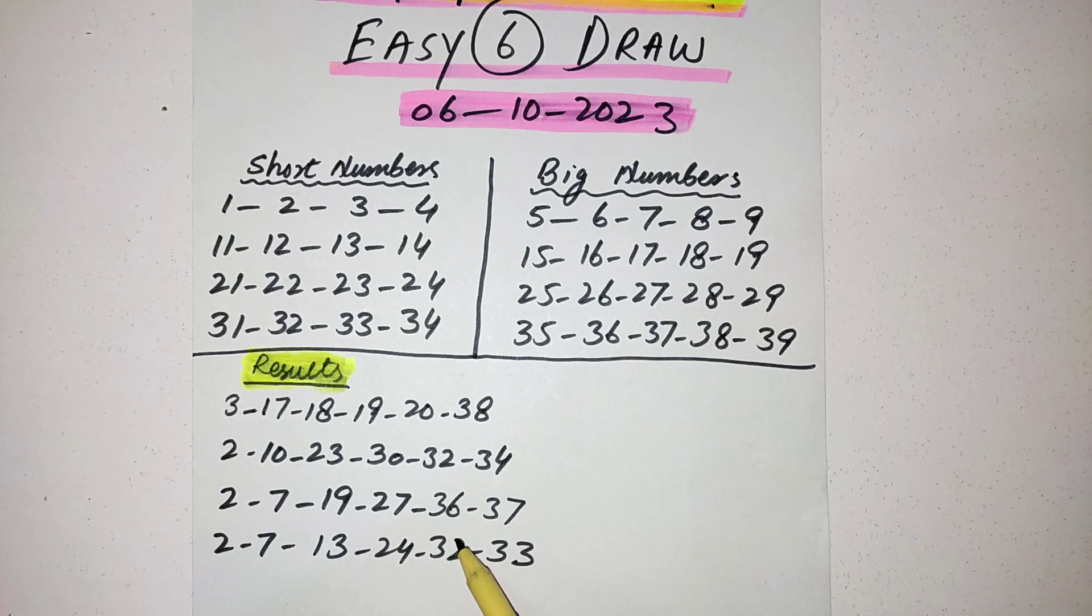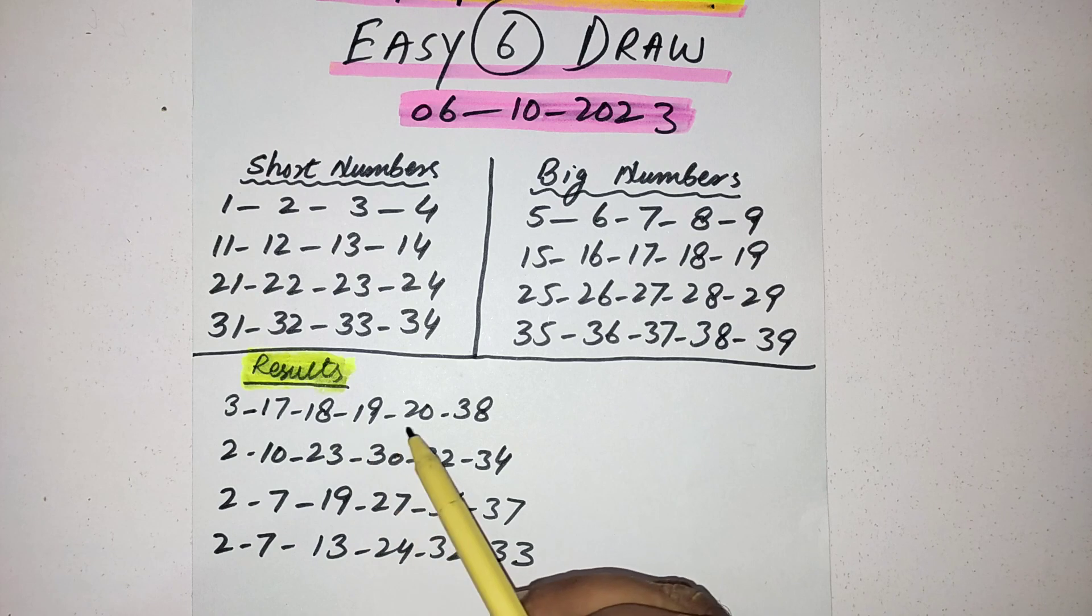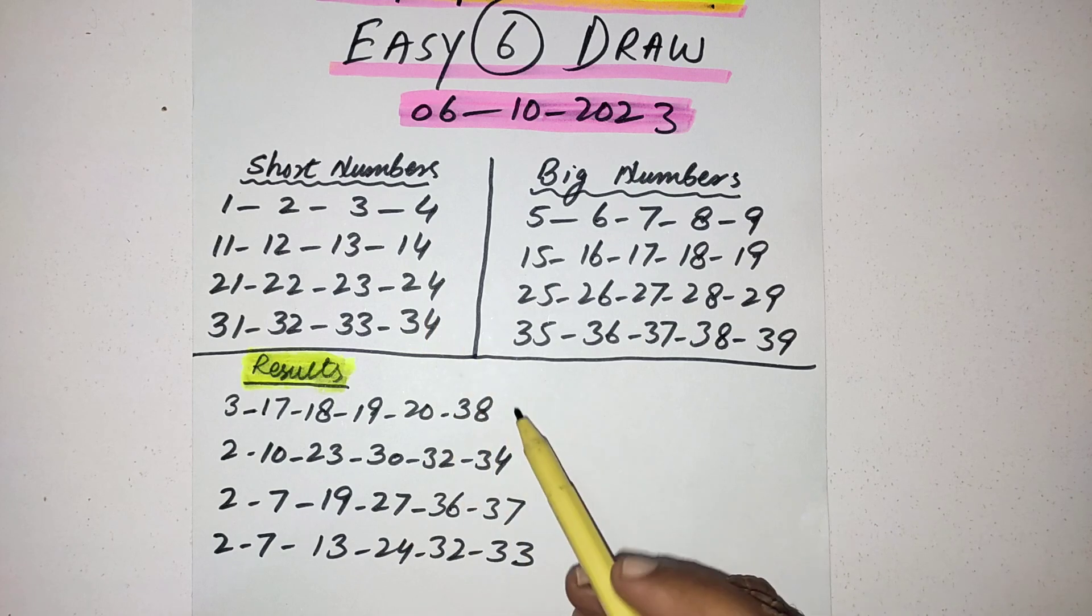Now they are picking in one draw, they are picking most numbers from big numbers, and in one draw they are picking most numbers from short numbers. You can see in the first draw 17, 18, 19, and 38 they picked from big numbers, four numbers.